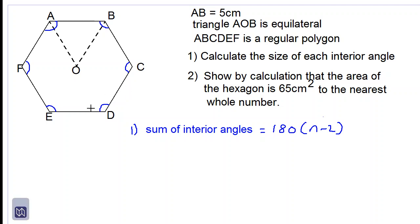N is the number of sides: 1, 2, 3, 4, 5, 6 sides. So we have 180 times 6 take away 2, which is 180 times 4. 6 take away 2 is 4, and we get 720 degrees.